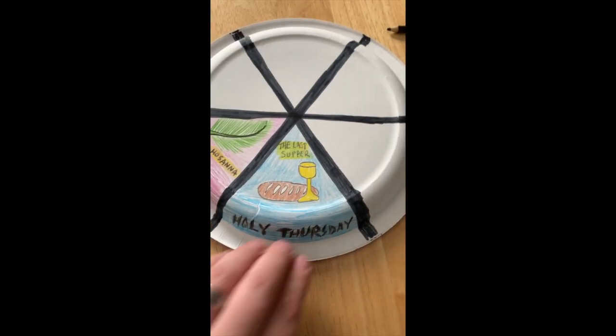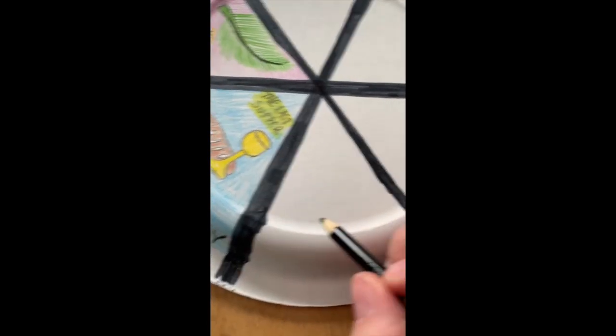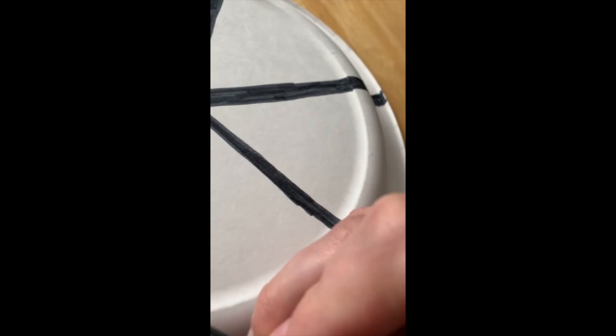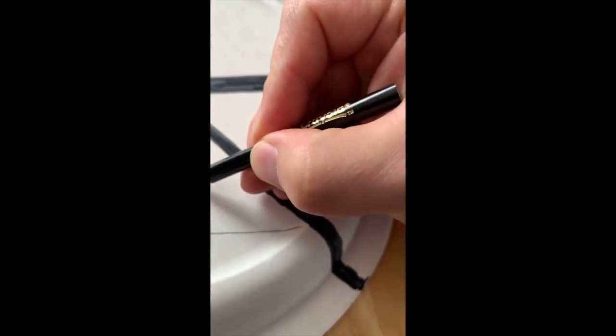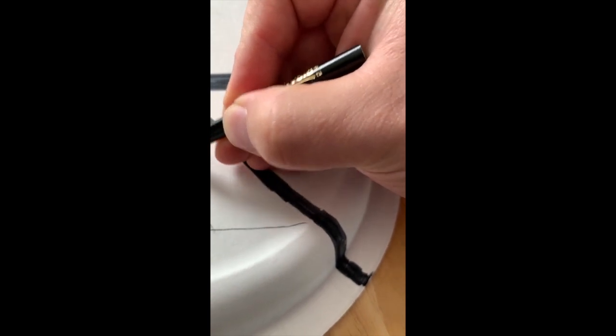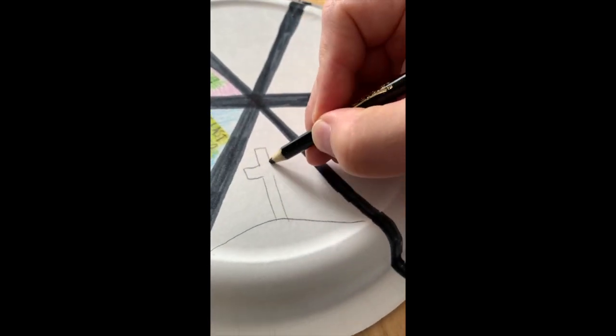Now the next piece of our puzzle is our Good Friday picture. And for this one I decided to add a hill with three crosses. So in this video you can see I'm drawing three of them right now—a large one in the middle with two smaller ones on the side.